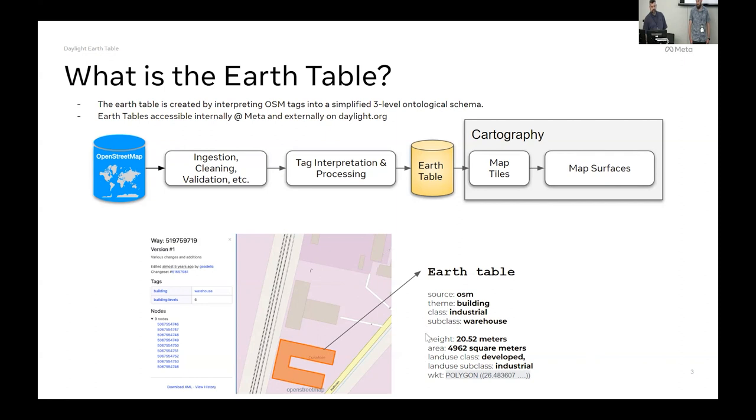You can see a quick example here of what a building - this building has two tags, warehouse levels. We've given it all kinds of stuff. We know it's industrial, it's a warehouse.